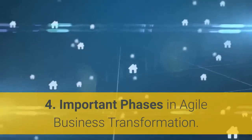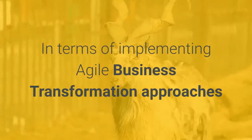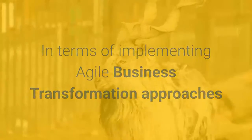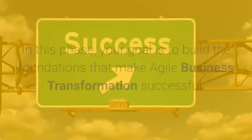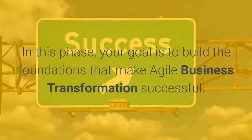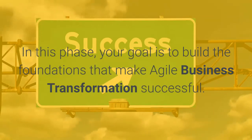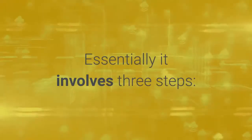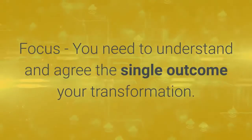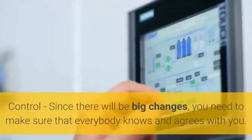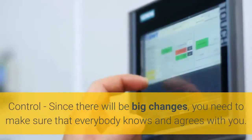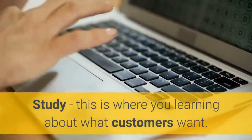4. Important phases in agile business transformation. In terms of implementing agile business transformation approaches and ways of working in your organization, they can be summed down to three simple phases. Phase 1: Agile Discovery. In this phase, your goal is to build the foundations that make agile business transformation successful. It essentially involves three steps: Focus — you need to understand and agree on the single outcome of your transformation, which is your vision. Control — since there will be big changes, you need to make sure that everybody knows and agrees with you. Study — this is where you learn about what customers want.